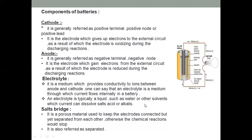The battery's operation is dependent on the electrolyte. If the electrolyte breaks down, we cannot maintain connectivity between the cathode terminal and the anode terminal, and the current flow between cathode and anode is stopped.